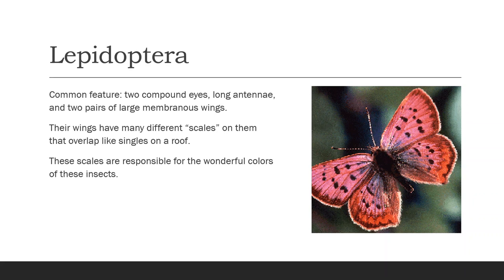Lepidoptera have these common features: they all have two compound eyes, they have long antennae, and two pairs of large membranous wings. It's those wings that are the biggest feature of Lepidoptera, with many different scales on them — which is why they're called Lepidoptera.